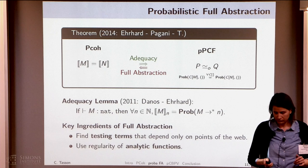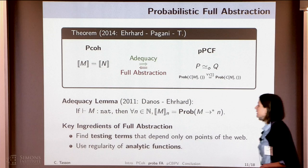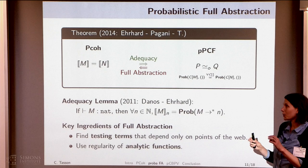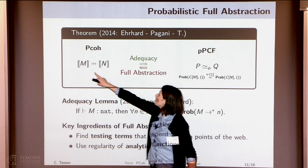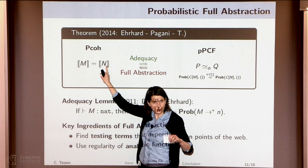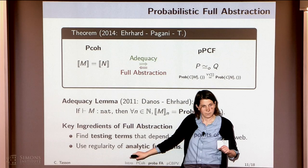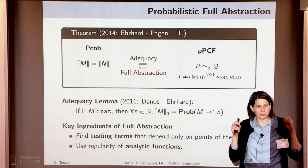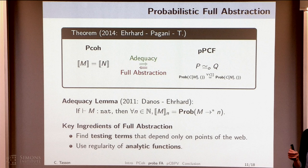Our testing terms depend on parameters and we need to find parameters. We vary our parameters so that we have different analytic functions. If they differ, we know there is one point on which they differ. Regularity means that when you have two different analytic functions, you can find a point on which they differ — just as in the real-valued case.